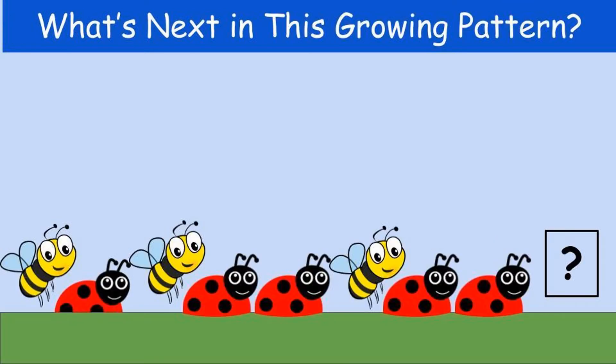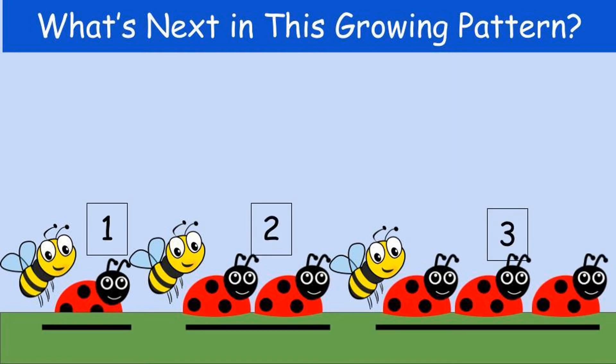Here's our next growing pattern. Do you think that the question mark is going to be a bee or a ladybug? If you added another ladybug then you are correct. The first one is a bee followed by one ladybug. Then you have a bee and two ladybugs. Then you have a bee and three ladybugs. We would follow that with a bee and four ladybugs.